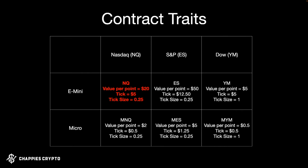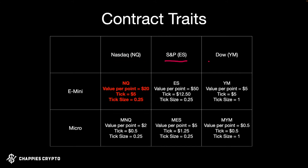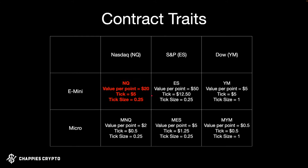First and foremost, I just wanted to recap the three different types of futures contracts I've been covering in the 101 series. I'm going to focus this first section on the NQ or the Nasdaq, and it will be the e-mini contract we're going to use as the example. The three contract types are: the Nasdaq (NQ), the S&P (ES), and the Dow (YM), each with their own traits — size, value per point, tick size, and tick value.